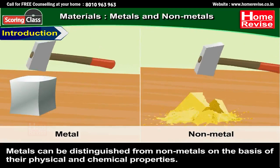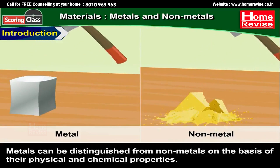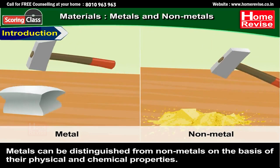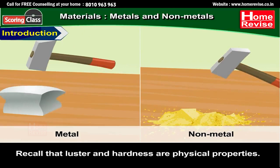Metals can be distinguished from non-metals on the basis of their physical and chemical properties. Recall that lustre and hardness are physical properties.